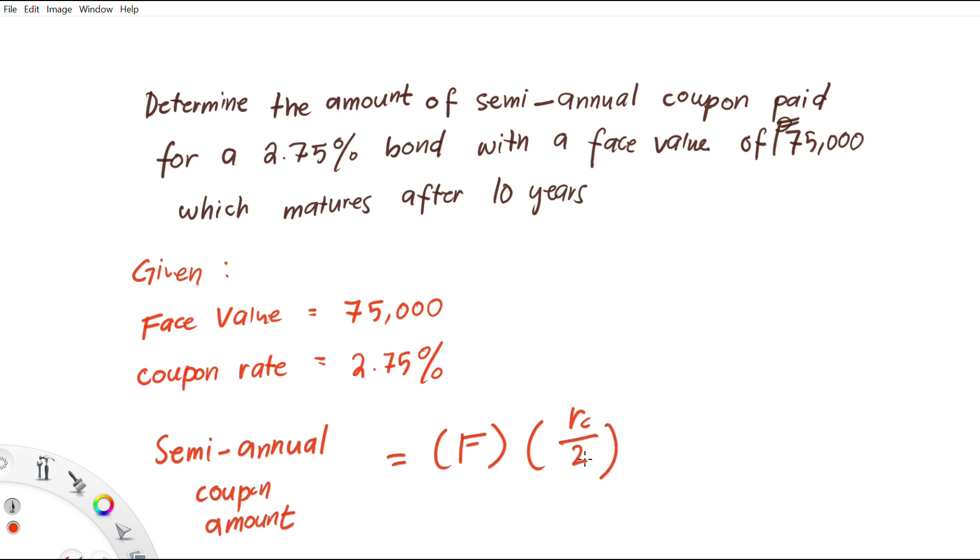F here is the face value, and let's plug the values in. We have 75,000 times the coupon rate 0.0275 over 2. So this 2 here is because we have semi-annual as our time frame.